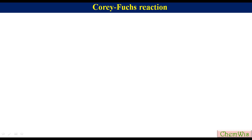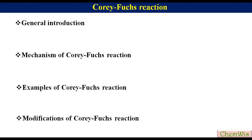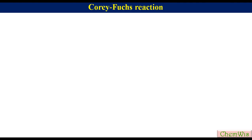Hello friends. The topic of today's discussion is the Corey-Fuchs reaction. In this lecture we will discuss the following points: general introduction, mechanism, examples, and some modifications. The Corey-Fuchs reaction is a two-step process for the conversion of an aldehyde to a homologous terminal alkyne.